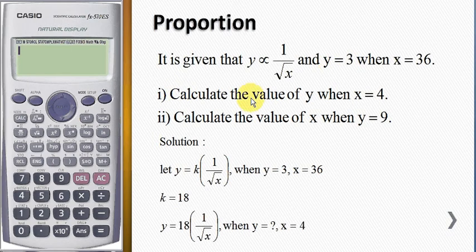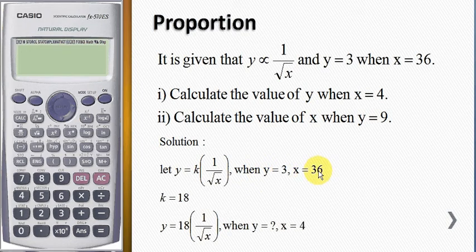We want to find the value of y when x equals 4, and the value of x when y equals 9. To find the solution, let y equal k times 1 over square root x. When y equals 3 and x equals 36, we need to find the value of k.